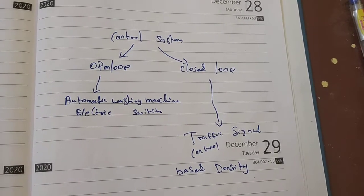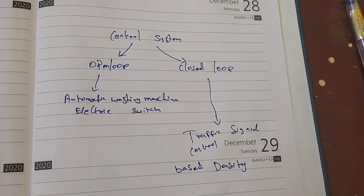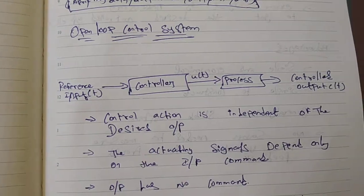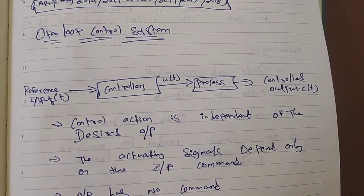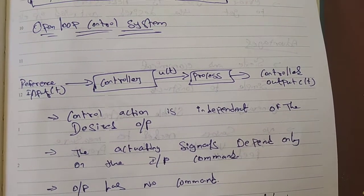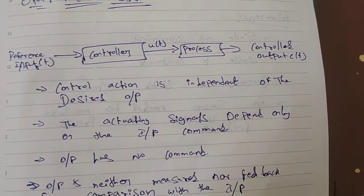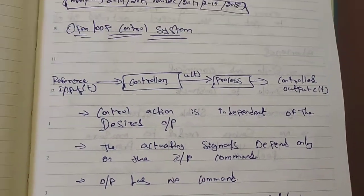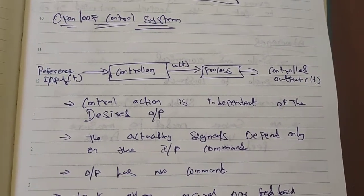Open loop control system and closed loop control system. Two of them are available. In this video we will see the first one, which is open loop control system. Examples include the washing machine and normal on-off switch. The first diagram shows the reference input.